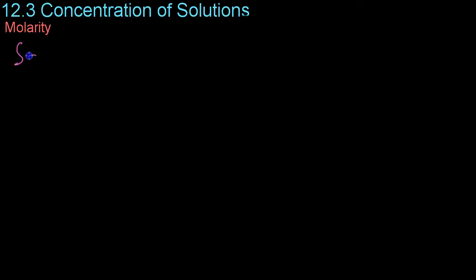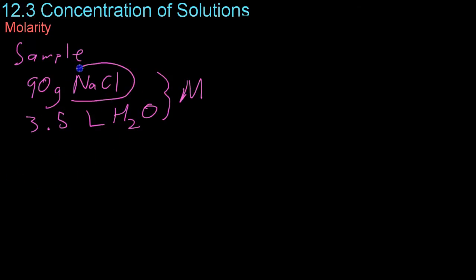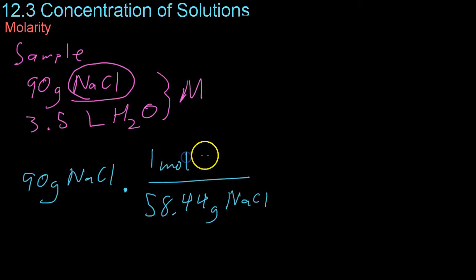Now we're going to do a sample problem. Let's say you were given 90 grams of salt to mix with 3.5 liters of water, and you had to know what is the molarity of this solution that you're going to make. So you'd start off by calculating how many moles of salt you actually have. So for 90 grams of salt, then you have to use the molar mass, which we know is 58.44 grams of salt for each single mole of salt.